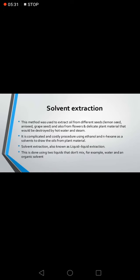Solvent extraction: this method is used to extract oil from different seeds such as lemon seed and grape seed, and also from flowers and delicate plant material that would be destroyed by hot water and steam. It is a complicated and costly procedure using ethanol and n-hexane as solvents to draw the oils from the plant material. Solvent extraction is also known as liquid-liquid extraction, done using two liquids that don't mix, for example water and an organic solvent.